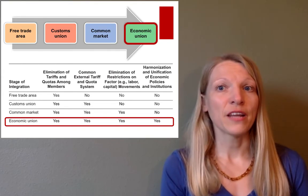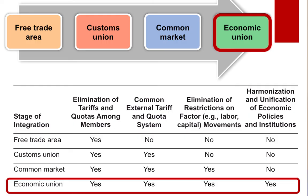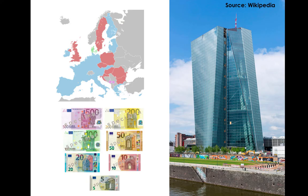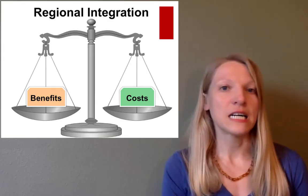The next stage of economic integration is the economic union, which is formed by members of a common market who agree to implement common social programs such as employee benefits and healthcare, and coordinate macroeconomic policies such as monetary policies that would lead to the creation of a single currency and a regional central bank. For example, a majority of countries in the European Union, called the Eurozone, share a single currency, the Euro, which is managed and administered by the European Central Bank.